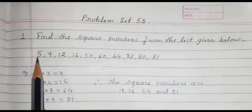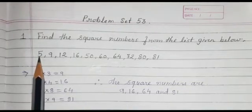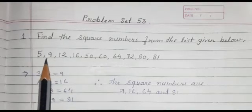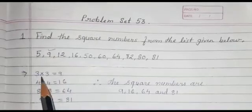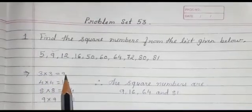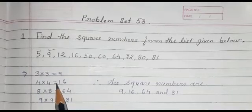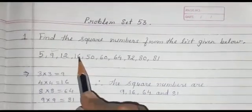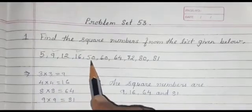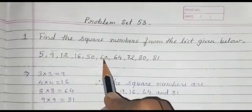5 is not a square number because 2×2=4 and 3×3=9. So 9 is a square number. Next, 4×4=16, so 12 is not a square number but 16 is a square number. Now, 50 is not a square number and 60 is not a square number.